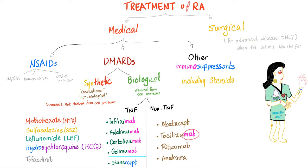If a drug name ends in -mab, it's a monoclonal antibody. Tocilizumab is anti-interleukin-6. Anakinra is anti-interleukin-1.